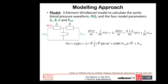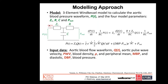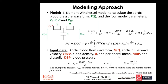The input data used to calculate model parameters were the flow from the left ventricle into the aorta, the pulse wave velocity, the blood density, and the peripheral mean and diastolic blood pressure. We developed a methodology to estimate these parameters from the input data, and then calculated central blood pressure.